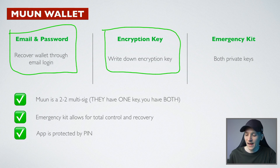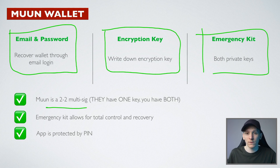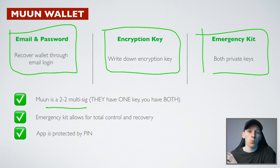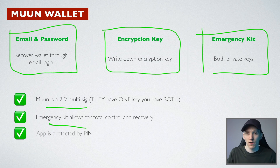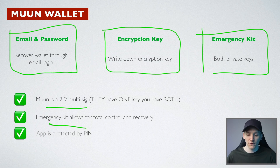The encryption key works with the emergency kit. Moon Wallet is a two-of-two multi-sig, meaning you have access to both keys needed to sign transactions — Moon actually holds one of them. This makes transactions easier, especially on the Lightning wallet. Moon owns one signing key and you have both, so you have ultimate control. They can never do anything with the wallet without the second key, which they don't own. The emergency kit allows for total control and recovery — it contains both keys encrypted, and works with your encryption key to decrypt them. The app is also protected by your PIN.